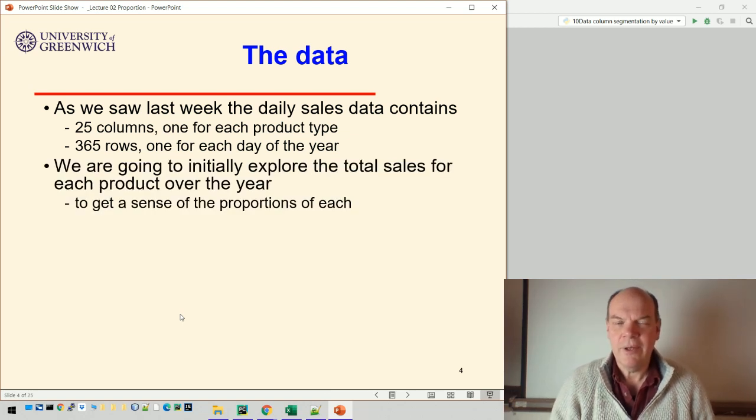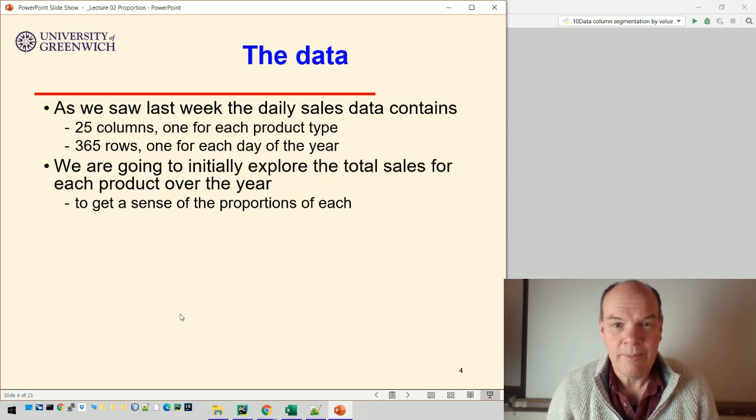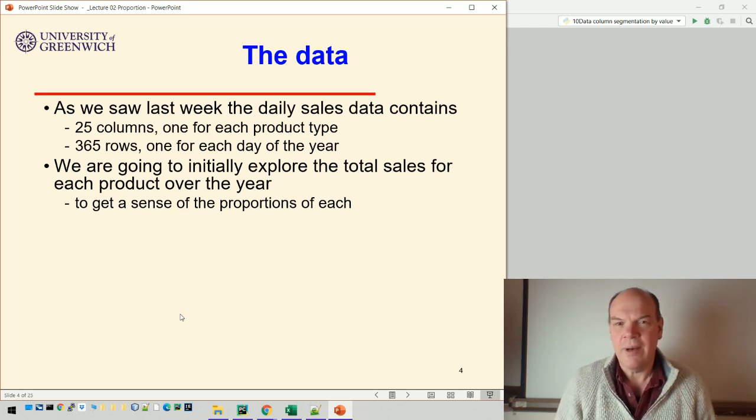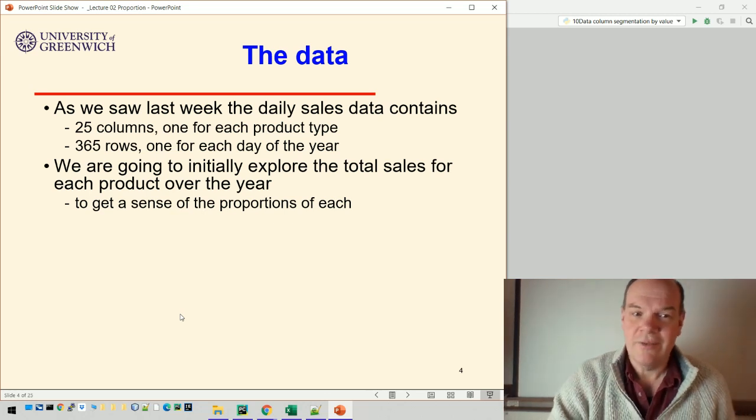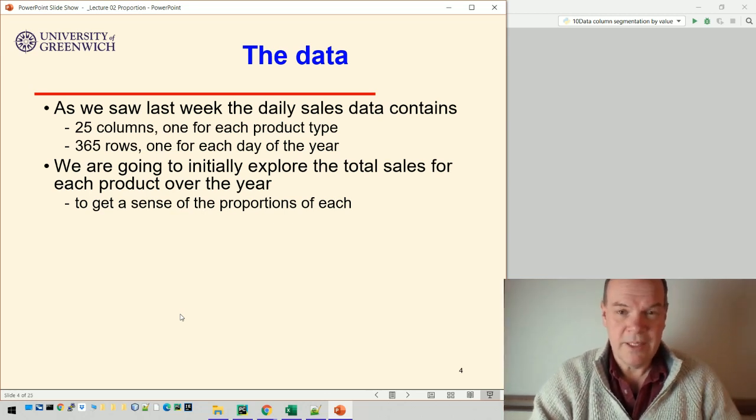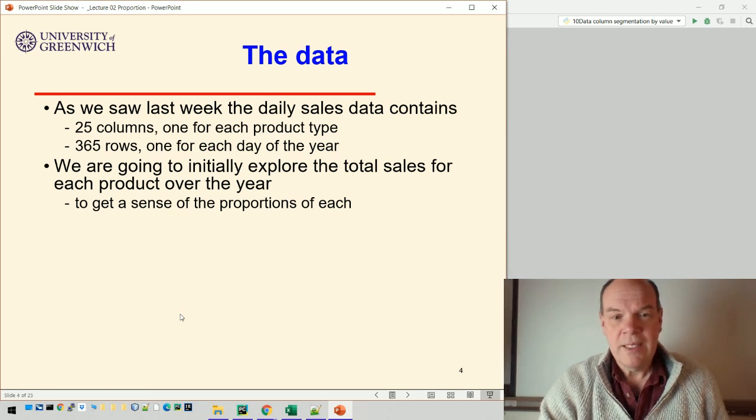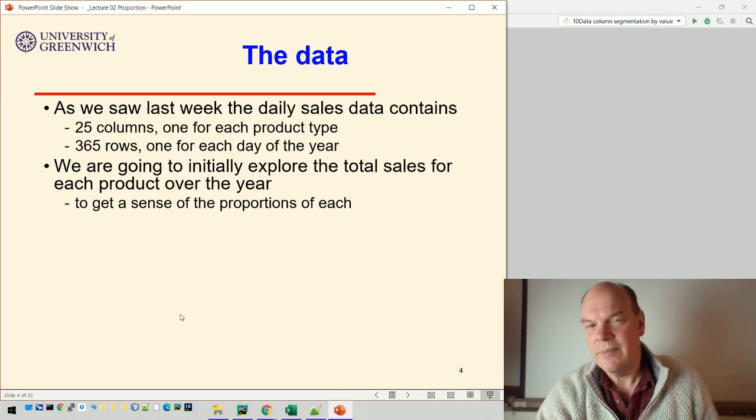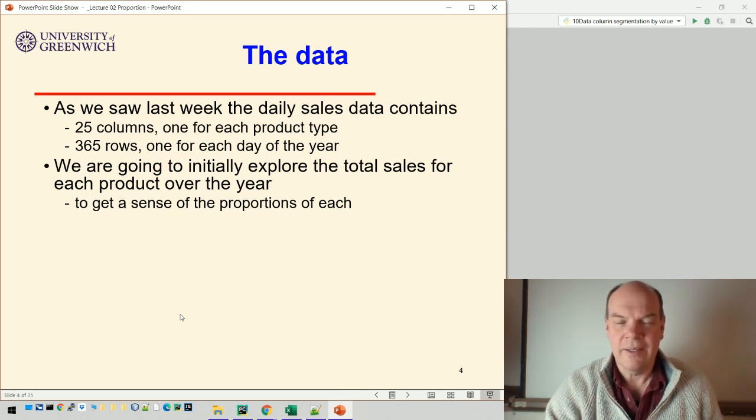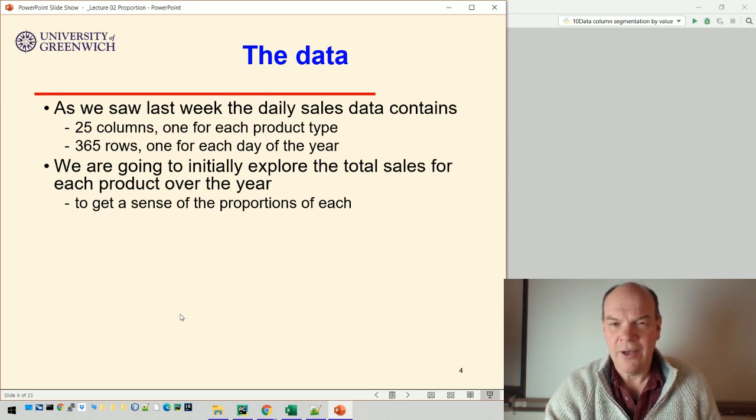Initially we want to make sense of our data. You can do that like we saw last week by just sorting and finding out what's the highest selling product, but this is of course about visualization, so let's visualize things. We're initially going to explore the total sales over the year to get a sense of the proportions of each. Next week and the week after we'll look at other things like whether they're going up or down, so we're not trying to find that out at the moment.